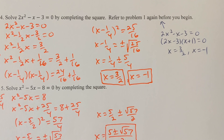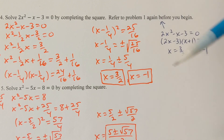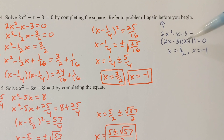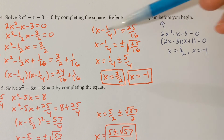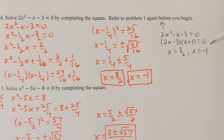Perhaps the next question you might have is: why in the world would I ever do the problem like this using completing the square when I could just get the answers in two lines of work by factoring?